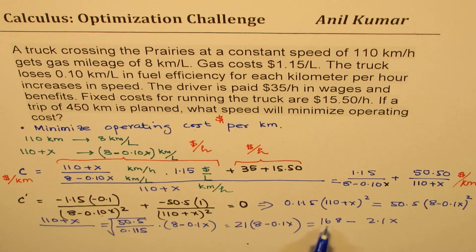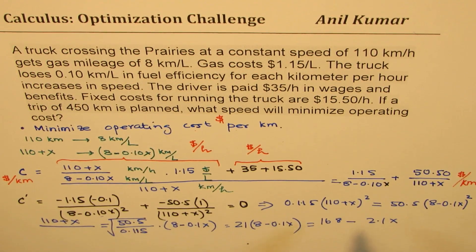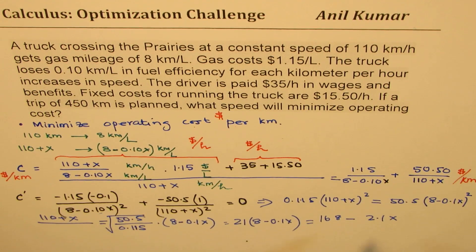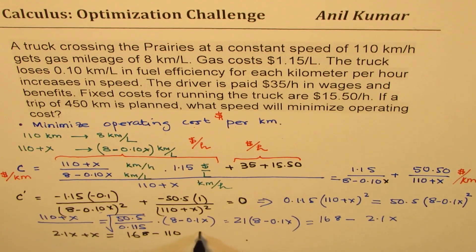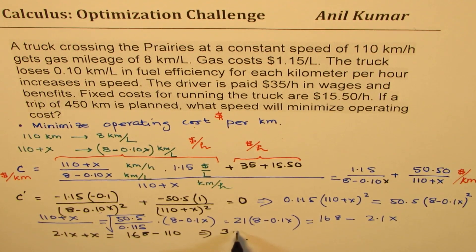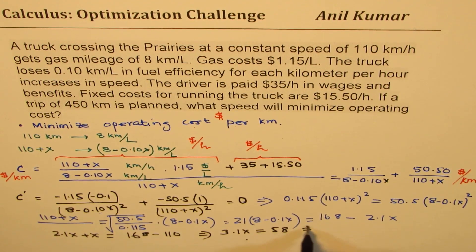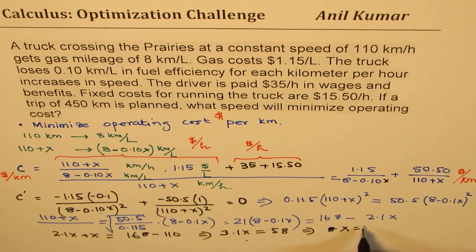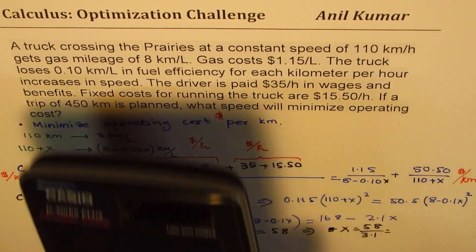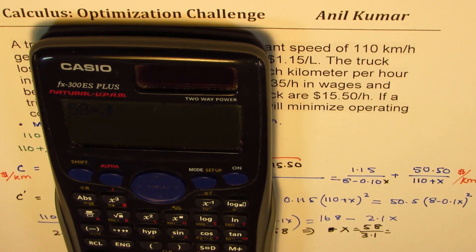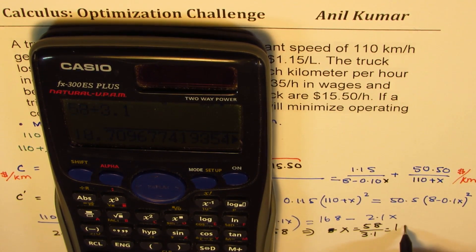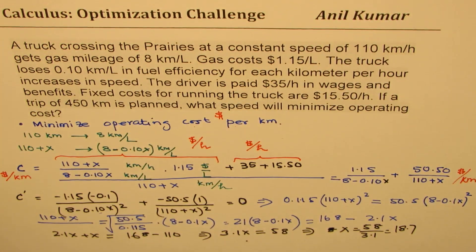Bringing like terms together: 110 plus x equals 168 minus 2.1x. Moving 2.1x to the left gives 2.1x plus x equals 168 minus 110, so 3.1x equals 58. Therefore x equals 58 divided by 3.1, which is approximately 18.7.